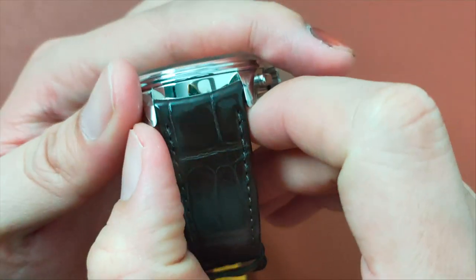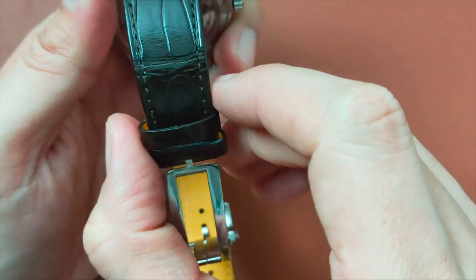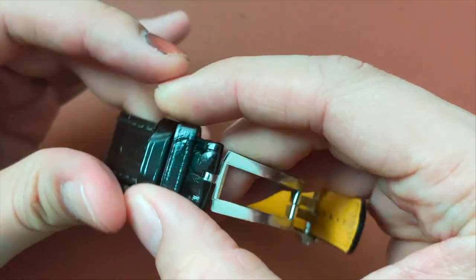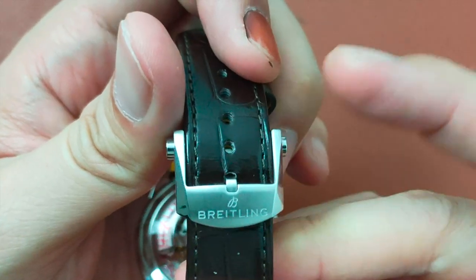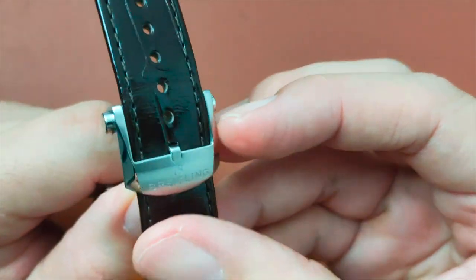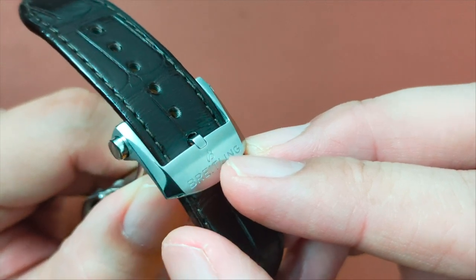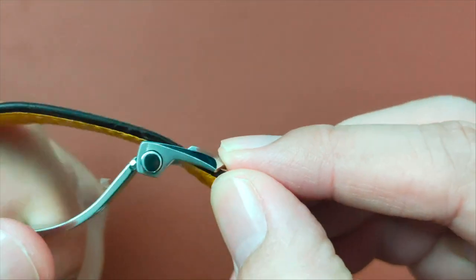The strap tapers down to 18mm. The very sporty yet elegant stainless steel folding clasp buckle here is brushed finish, with Breitling's name and logo engraved on it, whereas the bevel and twin pushes are all polished finish.